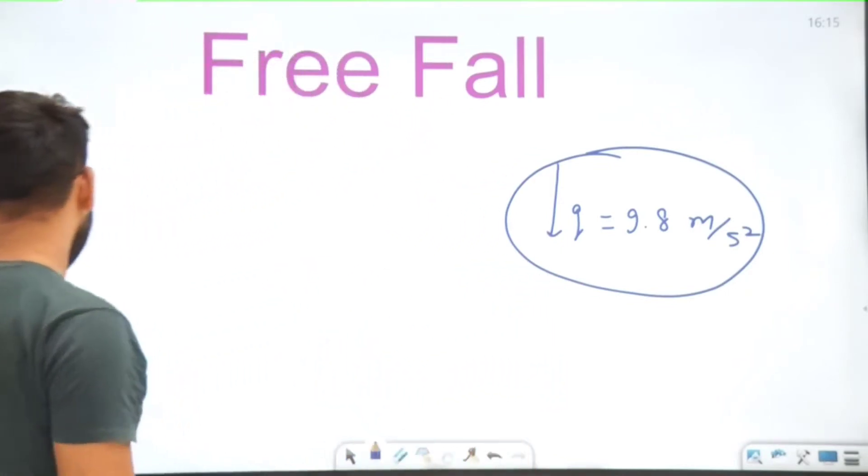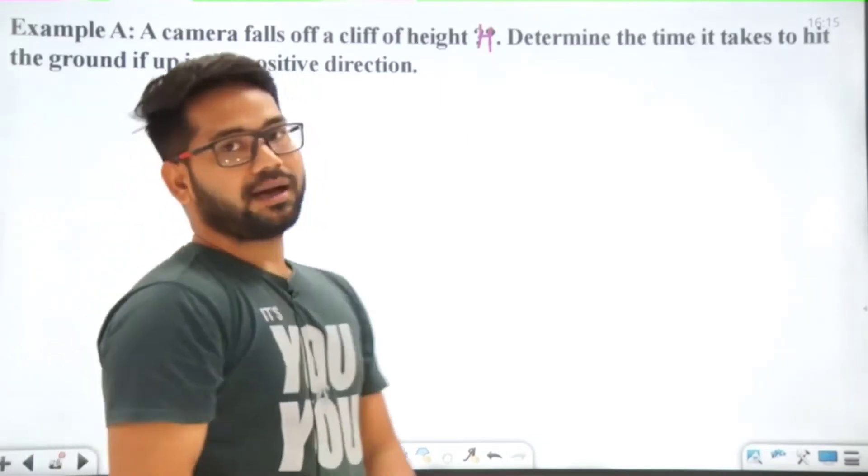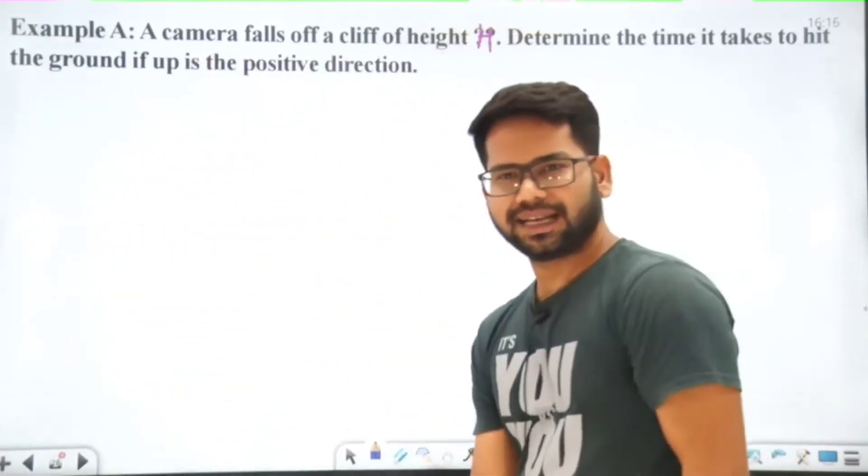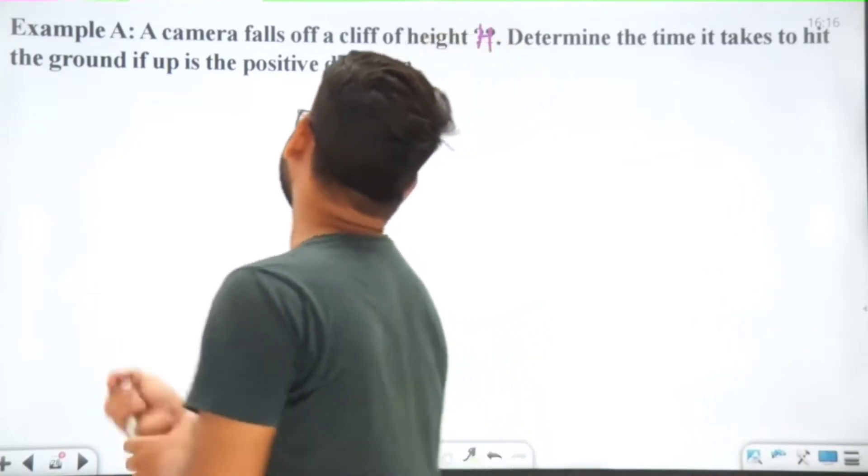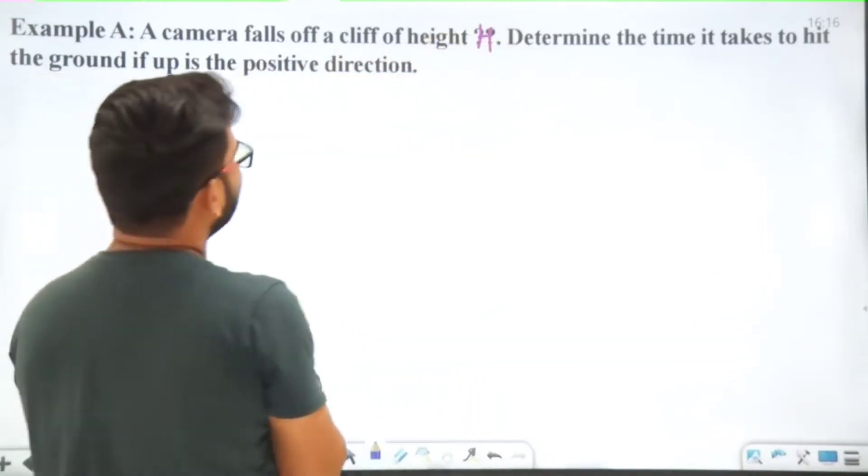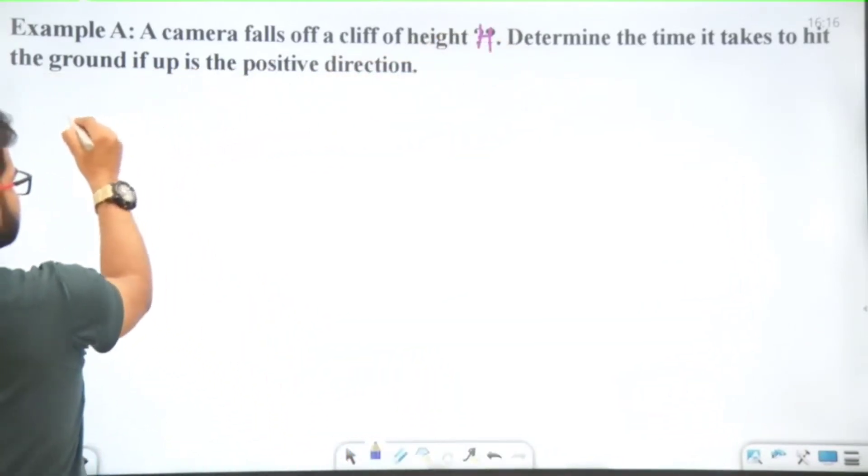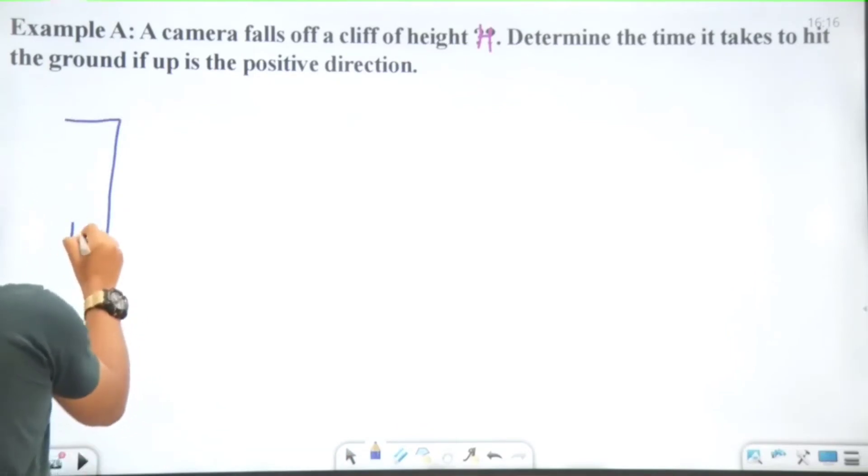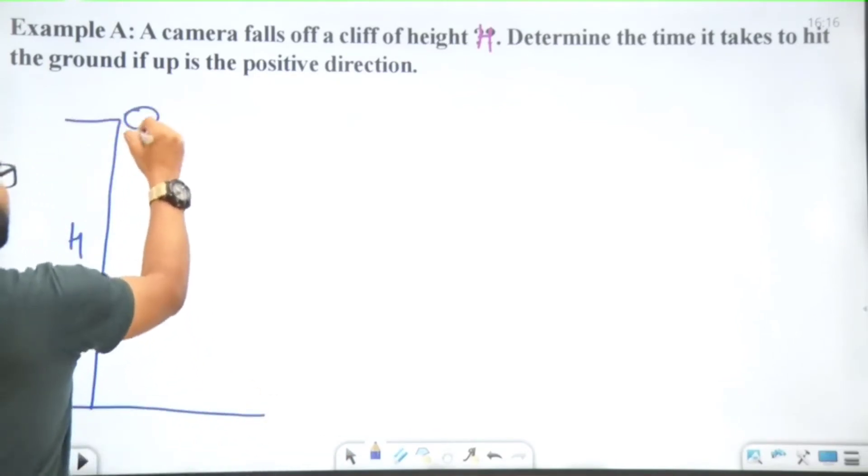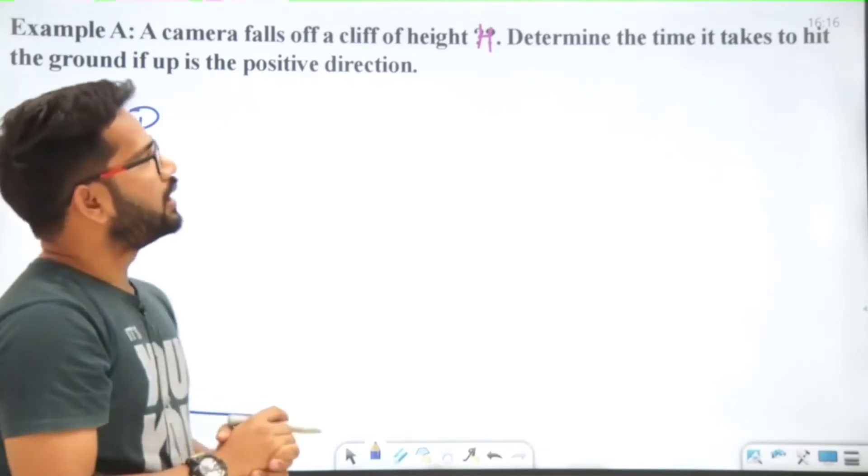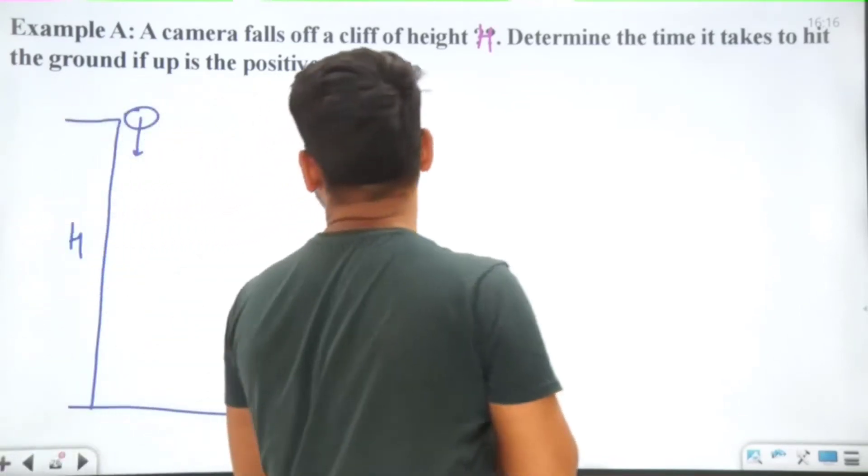Let's take an example and analyze the motion. A camera falls off a cliff of height h—this is the cliff of height h and the camera is falling from here. Determine the time it takes to hit the ground if up is the positive direction.